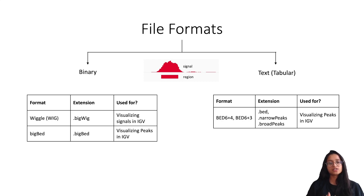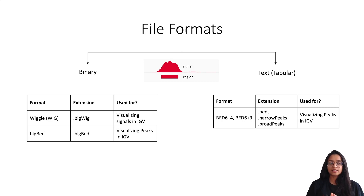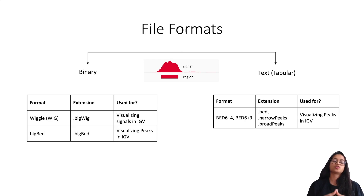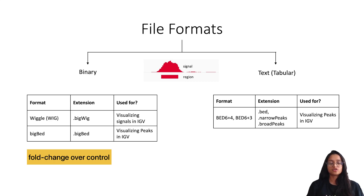ChIP-seq data can be stored in binary files or text/tabular files. Binary files include bigWig and bigBed formats, used to visualize signal in a genome browser. The bigWig format displays dense, continuous data as a graph in a genome browser. The bigBed format stores annotation items — simple or linked exon connections — created from BED files but in indexed binary format. Both bigWig and bigBed files cannot be viewed in a text editor or on the command line; they must be loaded in a genome browser. The signal in bigWig can be expressed as fold change over control at each position, or as p-values indicating peak significance.